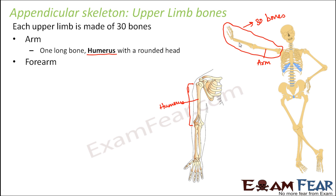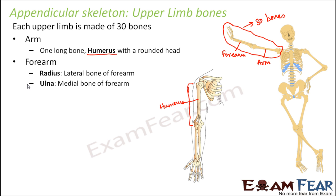The next part is the forearm. What is it made up of? You can see it is made up of two bones. The first bone is radius and the other bone is ulna. Radius is the lateral bone and ulna is the medial bone. These are the two bones which form the forearm.